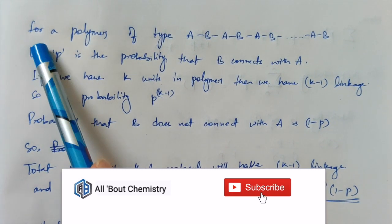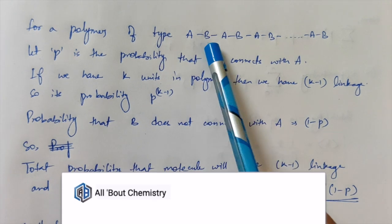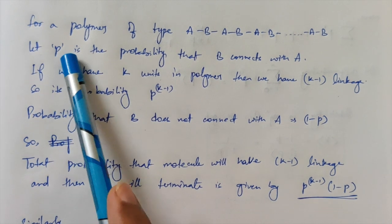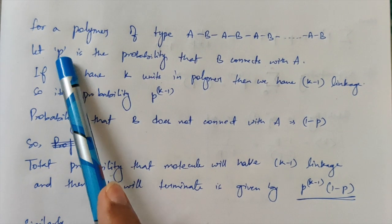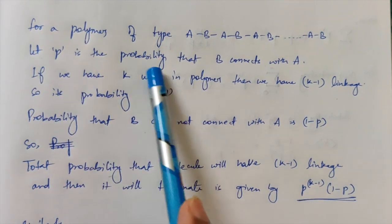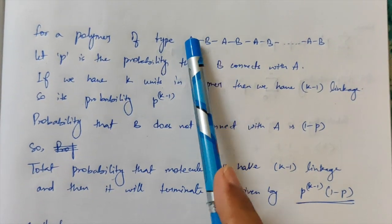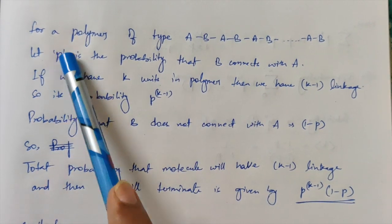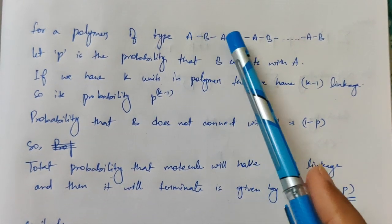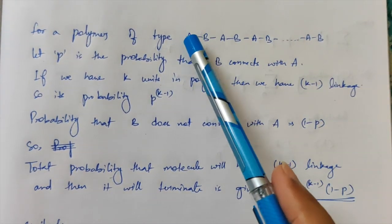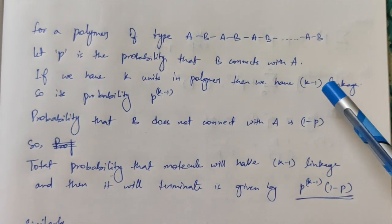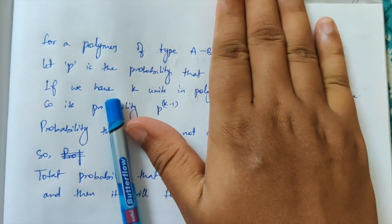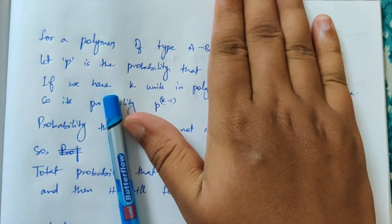We consider a polymer in which A and B form bonds alternatively. Let P be the probability that B connects to A. If we have K units — K number of A and B atoms — there will be K minus one linkages. For example, with two units you have one linkage, with three units you have two linkages, with four units A-B-A-B you have three linkages.